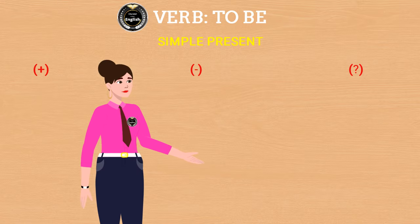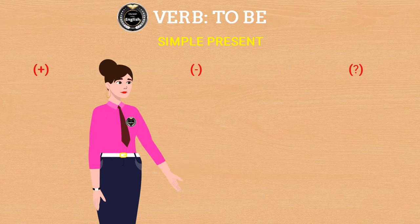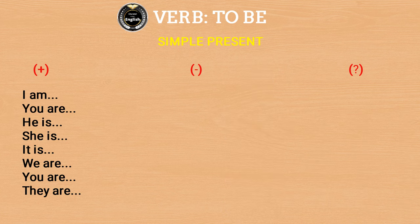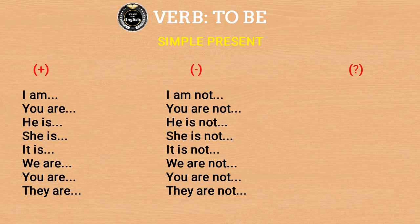Verb to be, simple present. Affirmative forms: I am, you are, he is, she is, it is, we are, you are, they are. Negative forms: I am not, you are not, he is not, she is not, it is not, we are not, you are not, they are not.